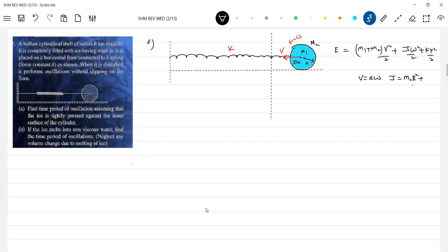The cylindrical shell, the ice will also rotate, ice is tightly pressed against the solid cylinder. It'll become solid cylinder m1 r squared by 2.